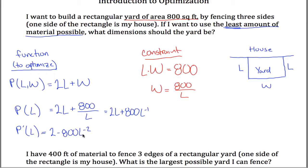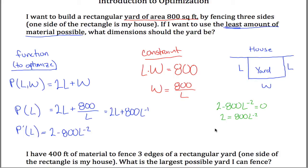To optimize, I set the derivative equal to 0: 2 − 800L⁻² = 0. Adding 800L⁻² to both sides gives 2 = 800L⁻². I don't like negative exponents, so I multiply both sides by L²: 2L² = 800. Dividing both sides by 2: L² = 400. Taking the square root: L = ±20.